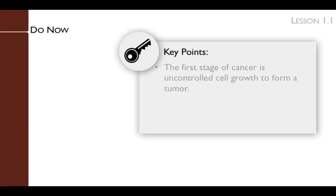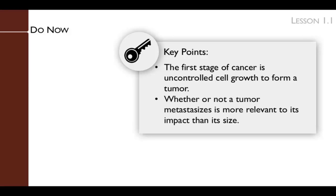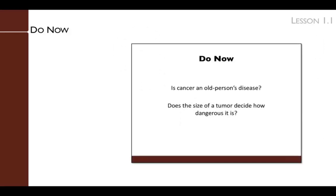The key points of the Do Now are that the first stage of cancer is uncontrolled cell growth to form a tumor, and whether or not a tumor metastasizes is more relevant to its impact than its size. Have students reflect on the relationship between when clinical symptoms appear and when the cancer first develops — often the appearance of a cancer gives no indication of when the tumor first arose. Explain that while large tumors can impair organ function, small tumors can be just as deadly if they spread to other parts of the body.